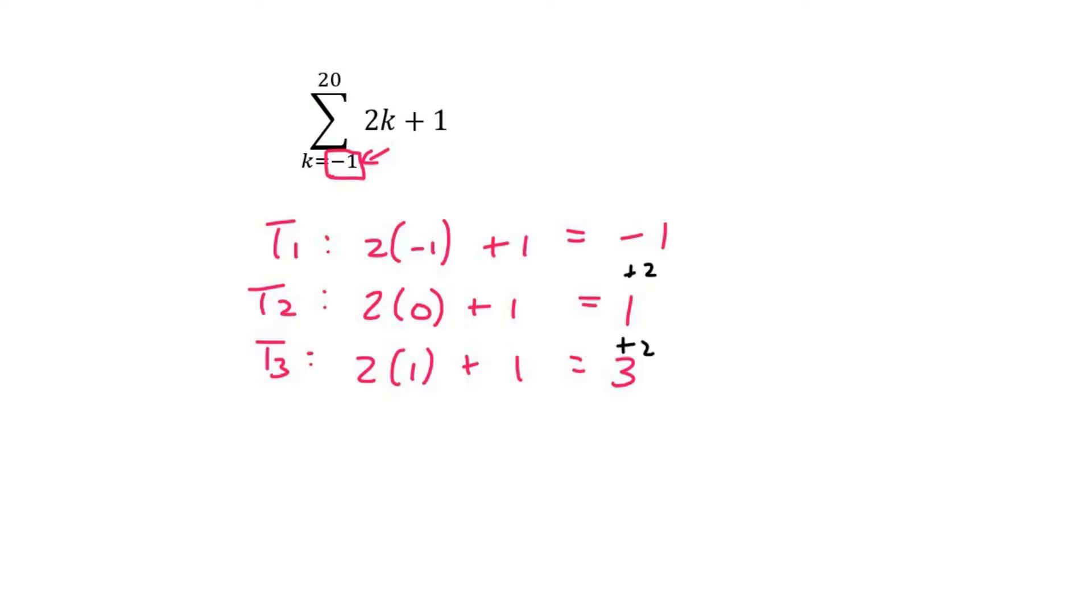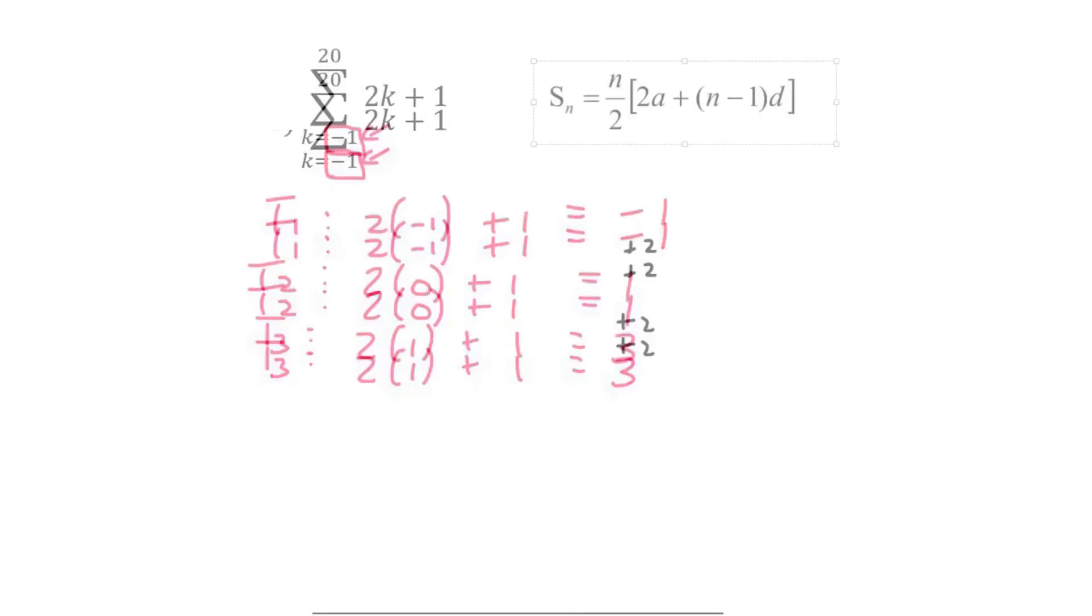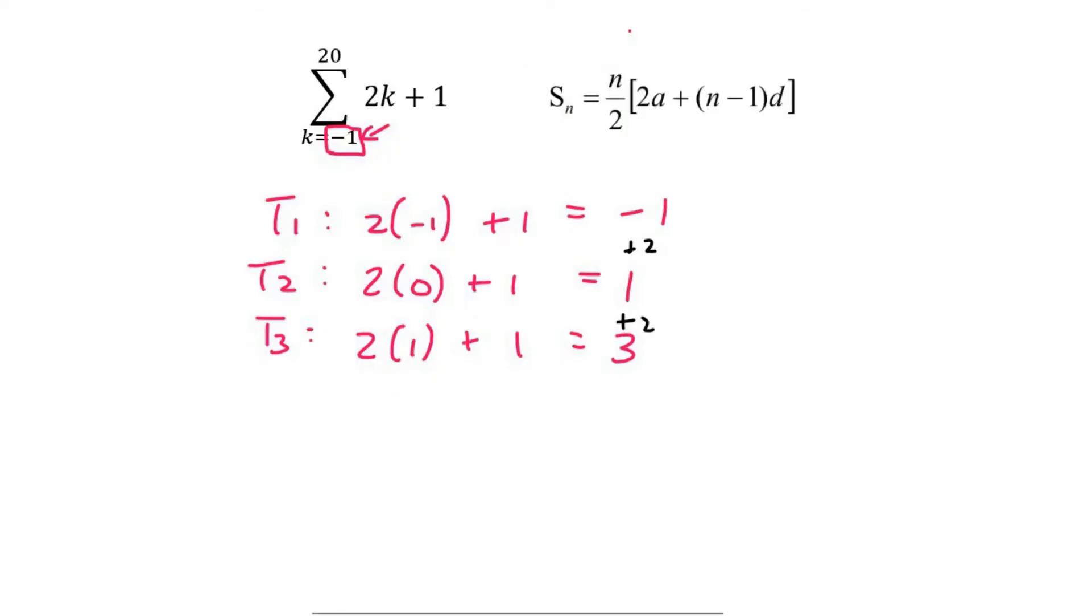Now guys, if you've looked at some of the previous questions, you'll remember that this number is not always the number of terms. To work out the number of terms, you take the top minus the bottom, which is this bottom number here, and then you plus one.